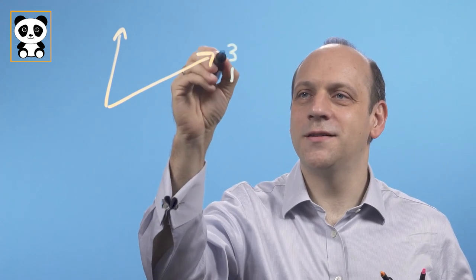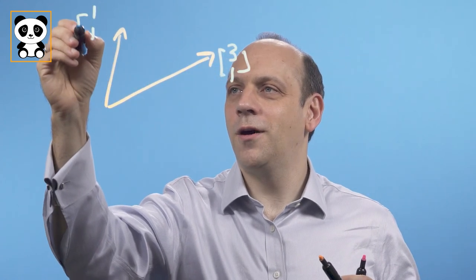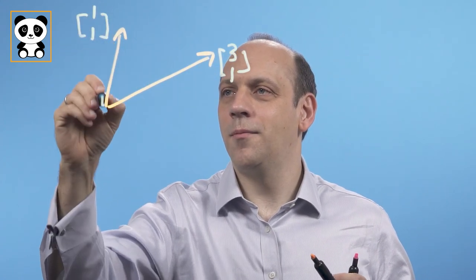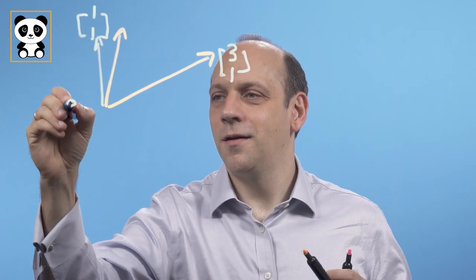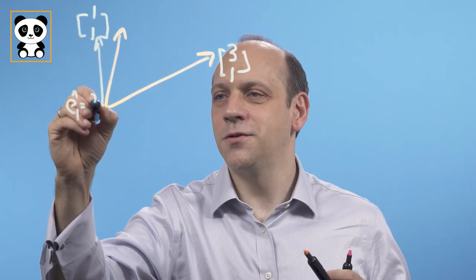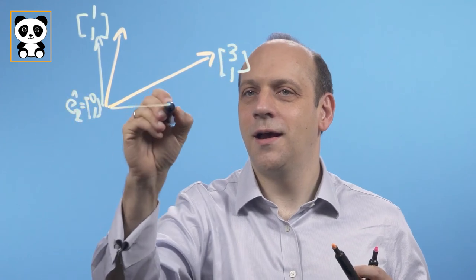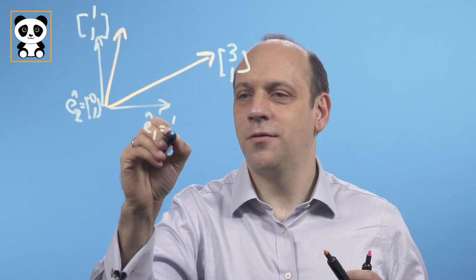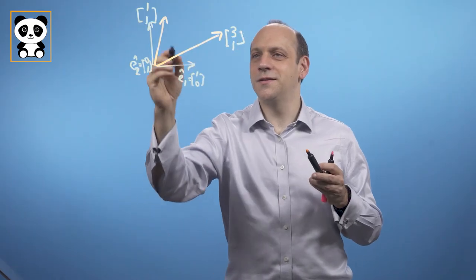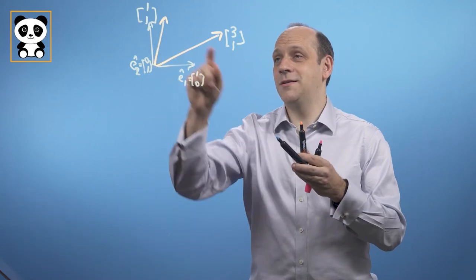Let's say I have two new basis vectors that describe the world of Panda Bear. Panda's world is orange. Panda's got a first basis vector and then another basis vector. In my world, Panda Bear's basis vectors are at 3,1 and at 1,1. My basis vectors are e1-hat equals 1,0 and e2-hat equals 0,1. Those are my basis vectors, and the orange ones are Panda's basis vectors.